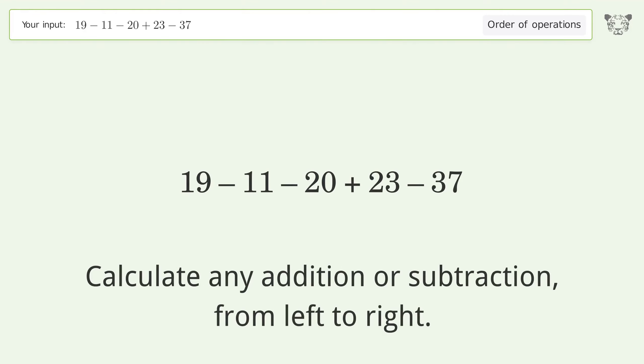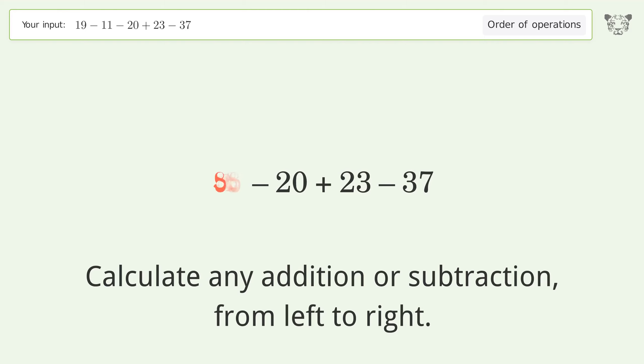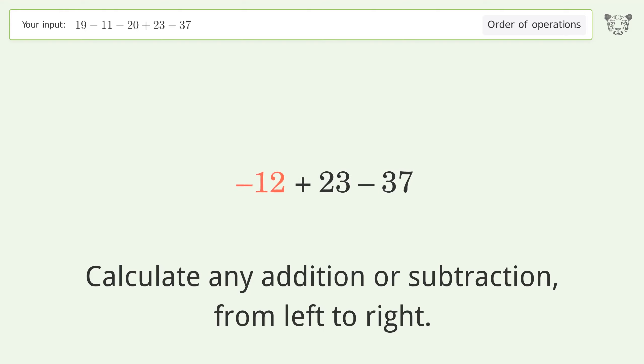Calculate any addition or subtraction from left to right: 19 minus 11 equals 8. Then 8 minus 20 equals negative 12, and negative 12 plus 23 equals 11.